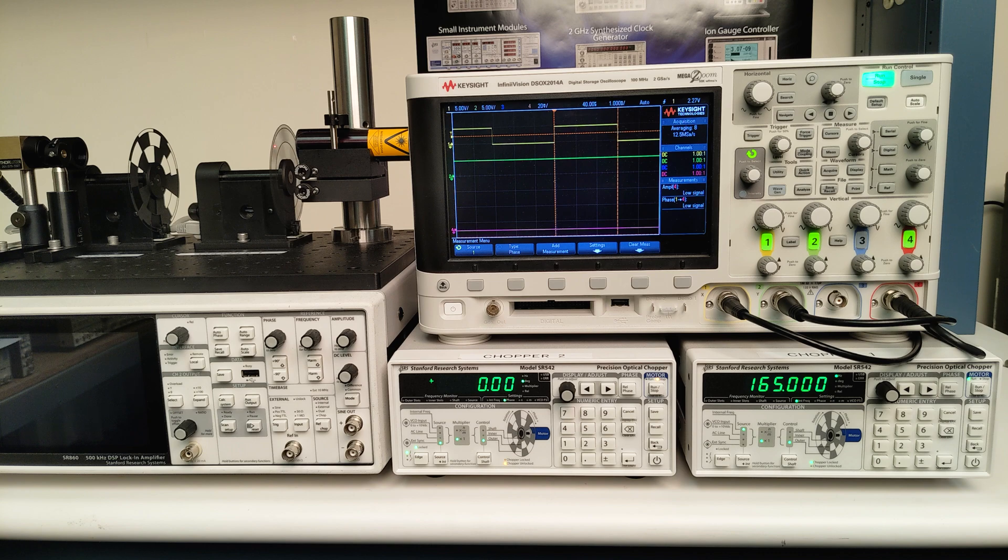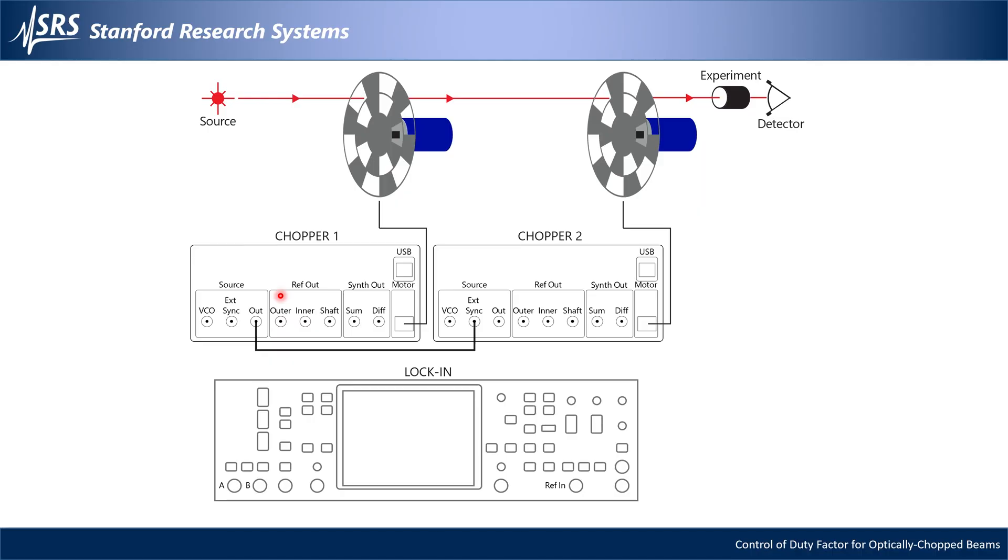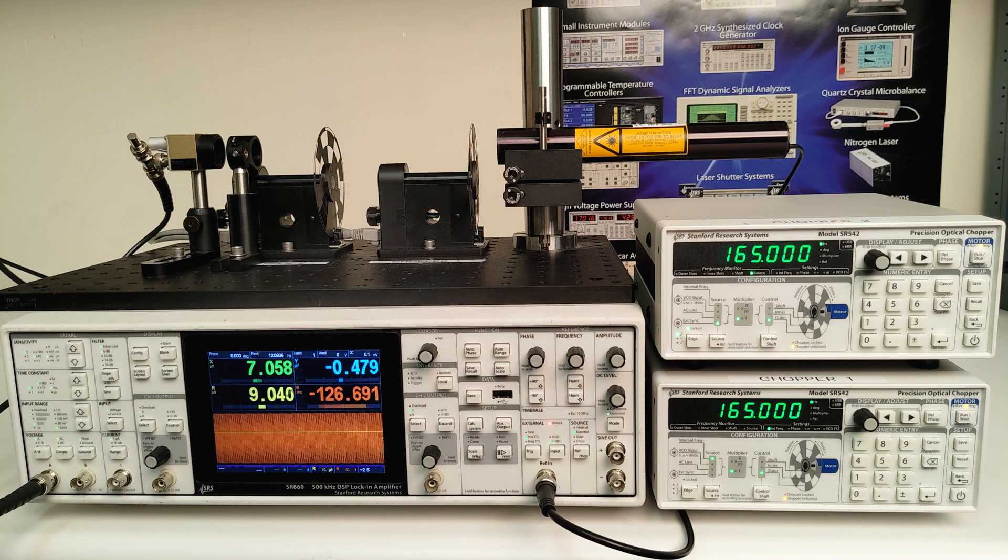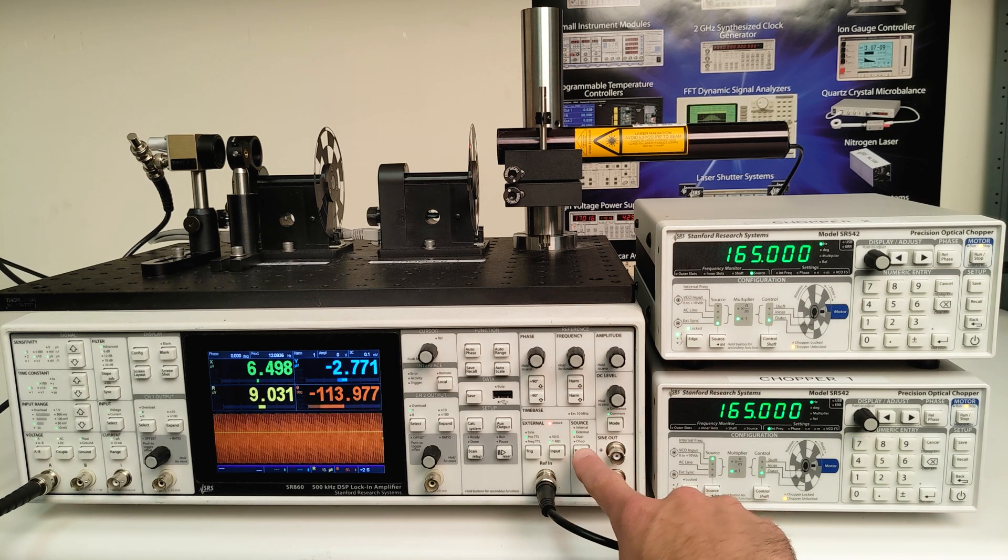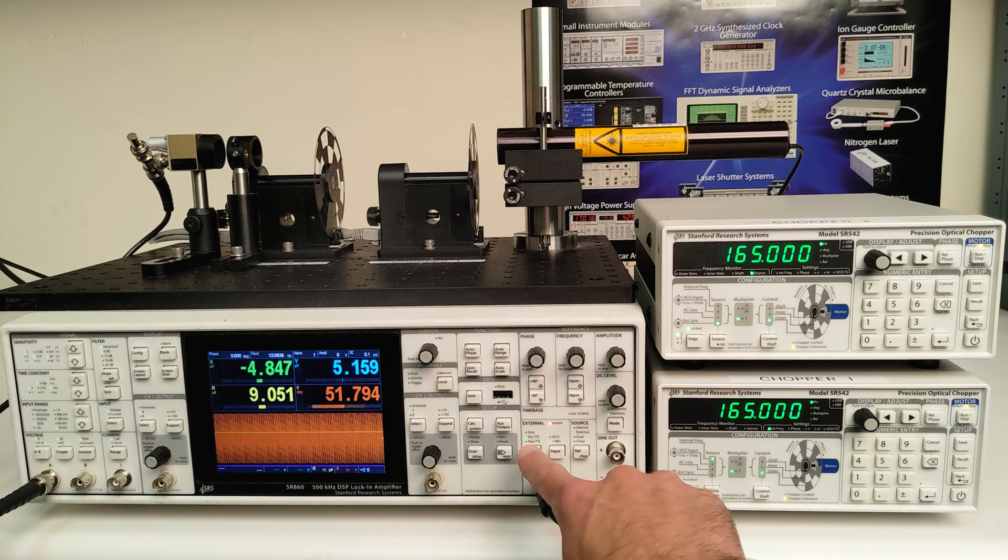So let's bring the signal and reference over to the lock-in. I've connected chopper 1's outer slots reference output to the lock-in reference input, making sure to set the reference source to external, positive TTL, and 1 megohm.